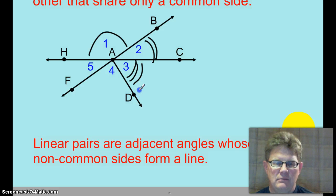Linear pairs are adjacent angles whose non-common sides form a line. We want to look again at angles 1 and 2. Okay, what is their common side again? What side do they share? That's what I'm asking you. What side do they share?